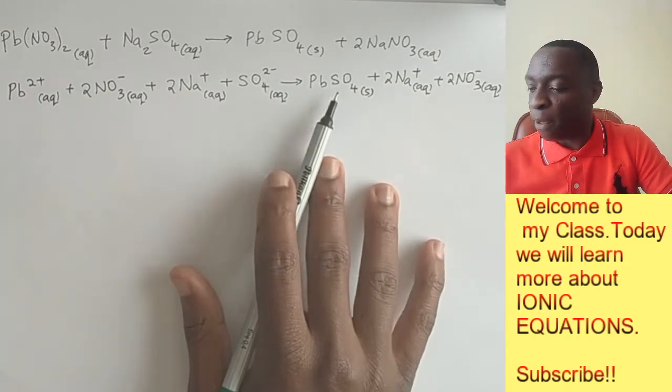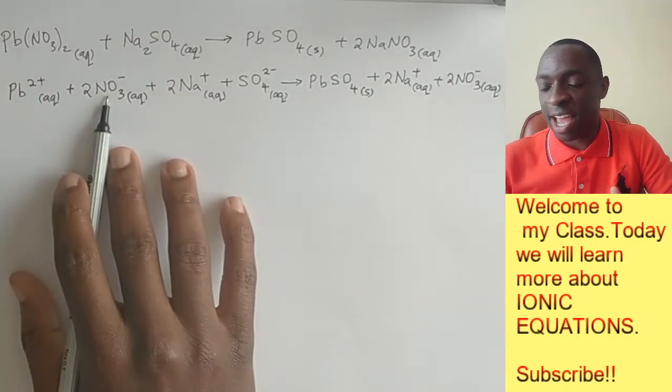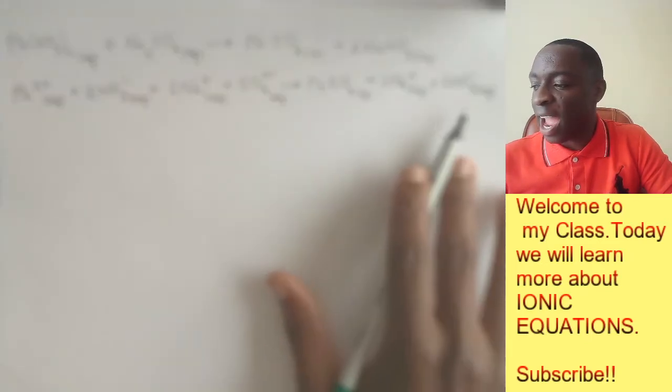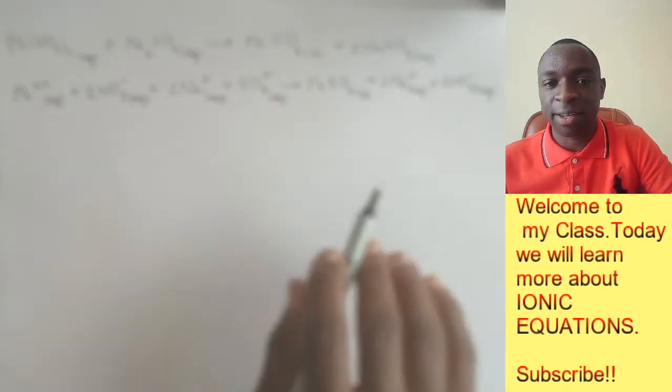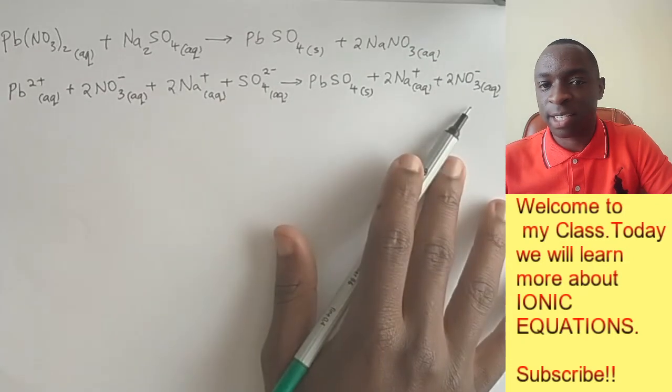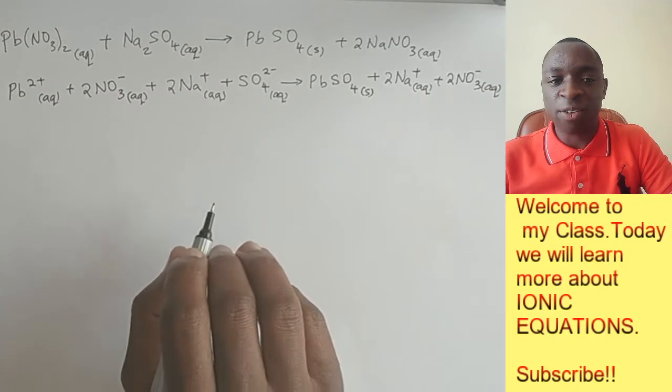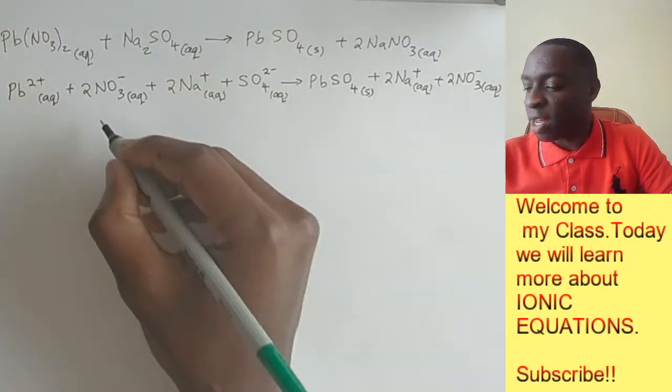However, if you look at nitrate ions, they remain unchanged in both the reactant side and the product side. You can see that. And so they are the spectator ions. We will cross them out like this.